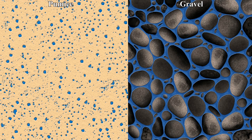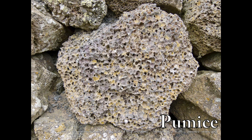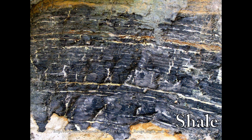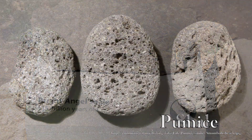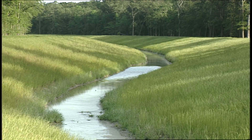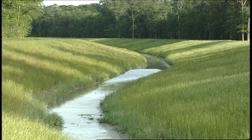Porosity itself isn't enough to create an aquifer. The areas filled with water must connect with each other so the water can flow from one pore space to another. That connectivity between pores is known as permeability. Permeability is a measure of how readily water can flow within the rock. Rocks such as pumice and shale can have high porosity but do not form productive aquifers because the pores within the rock are not connected.